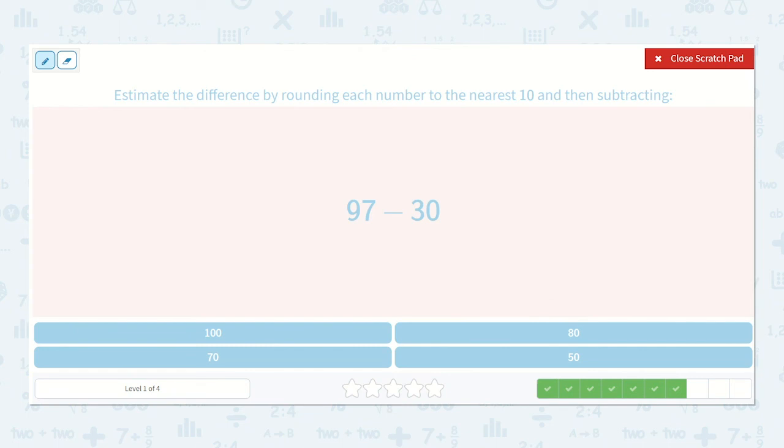97 minus 30, so 97 will round up to 100, and 30 will stay 30, that is the nearest 10. So 10 minus 3, which is 7, so 100 minus 30 is 70.